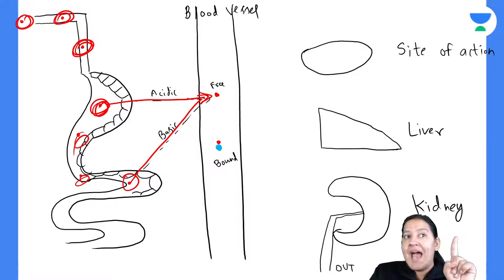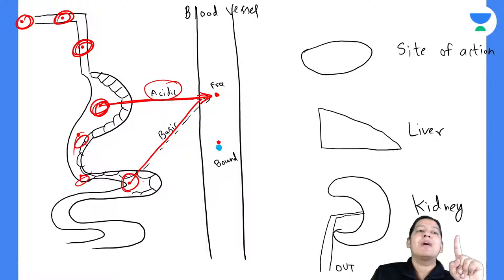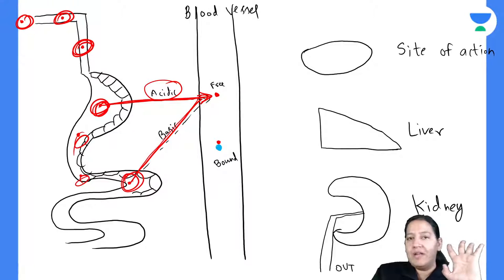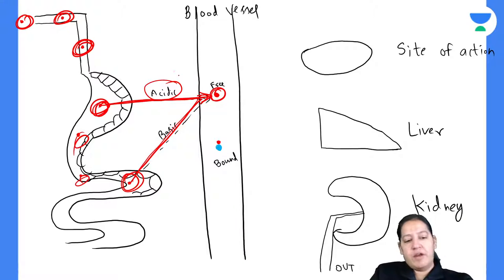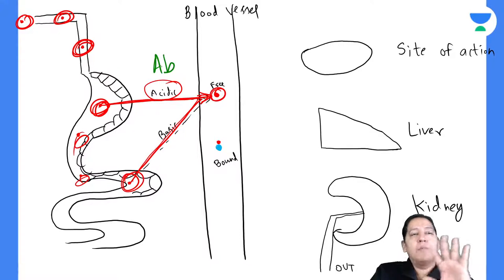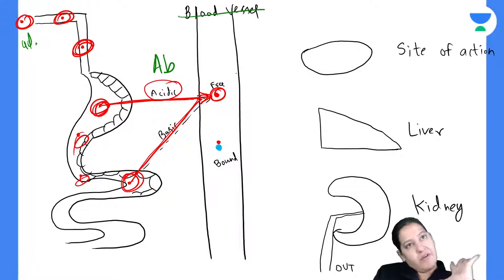Free drug goes to the tissue, bound drug remains in blood. We have understood volume of distribution here. This all is known as distribution. Now, the free drug enters the site of action and shows mechanism of action. If taking for headache, headache is treated. If for diarrhea, diarrhea is treated. Whatever disease I am having, the drug goes to its site of action and the disease is treated.